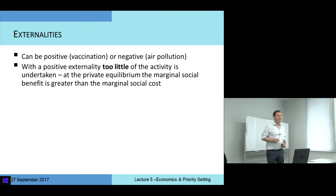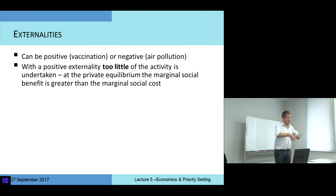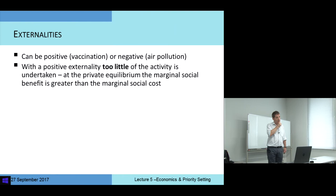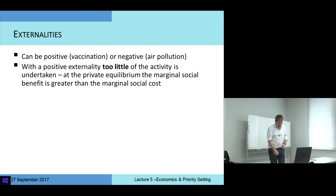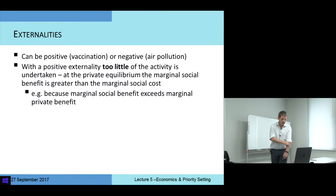With a positive externality, too little of the activity is undertaken — not enough of it. At the private equilibrium, at that point we'll get to if we just leave it to the market and to individual decisions of consumers and producers, the marginal social benefit is greater than the marginal social cost. In other words, by doing a bit more we get additional benefit enough to compensate for the additional cost, or more than compensate. An example of this is where the marginal social benefit of an activity exceeds its marginal private benefit — as in vaccination.